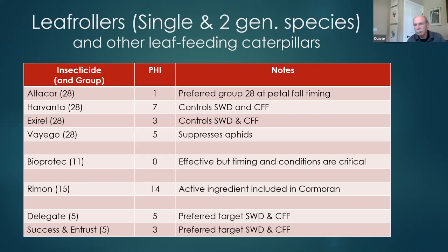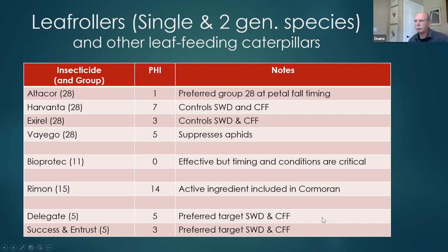The spinosads — Delegate, Success, and Entrust — are really good leaf roller materials, but we have a limited number of applications and they're important for SWD and cherry fruit fly, so we prefer to save those for later in the season when targeting cherry fruit fly and SWD. We'll also get incidental control of OBLR if timing coincides, which is usually late June to early July.